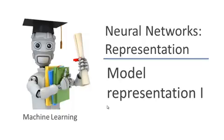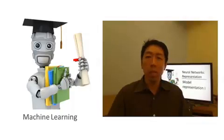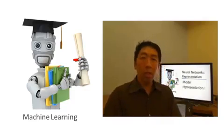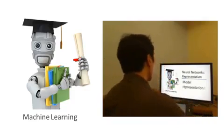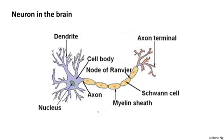In this video, I want to start telling you about how we represent neural networks — in other words, how we represent our hypothesis or model when using neural networks. Neural networks were developed to simulate neurons or networks of neurons in the brain. To explain the hypothesis representation, let's start by looking at what a single neuron in the brain looks like.